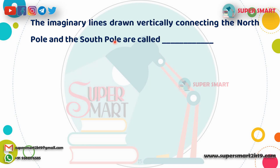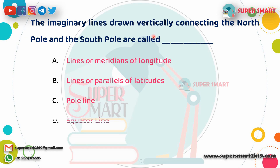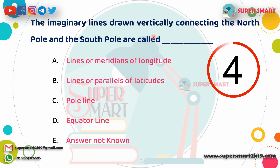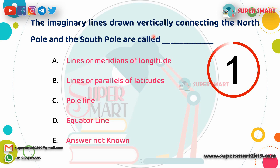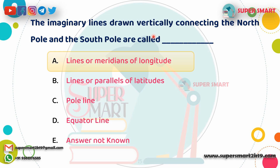Next question: The imaginary line drawn vertically connecting the North Pole and South Pole is called what? Answer: These lines are the Meridians of Longitude.